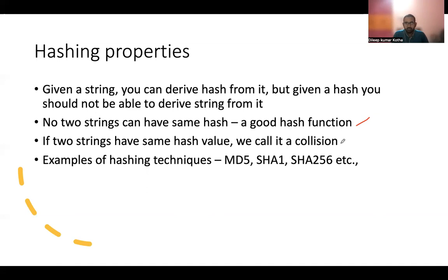It's not like collision is bad — collisions exist in a lot of existing hash table implementations in your programs, or already running in operating system code. There are a lot of collisions and it's a normal thing. But theoretically, a perfect hash function is one which doesn't have any collisions.